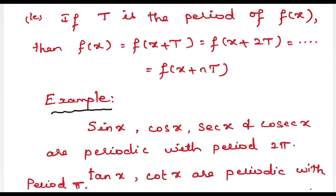For example, sin x, cos x, secant x, and cosecant x are periodic with period 2π. Similarly, tan x and cot x are periodic with period π. Therefore, a function that repeats its values again and again at regular intervals is called a periodic function.